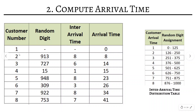For the second customer, the random digit is 913. It belongs to the 876–1000 range, so the inter-arrival time is 8. Thus arrival time is 0 plus 8, which equals 8. For the third customer, the random digit is 727, which belongs to the 626–750 range, giving an inter-arrival time of 6. The arrival time is 8 plus 6, which equals 14.